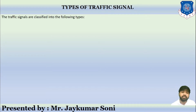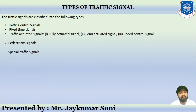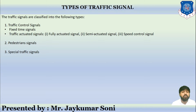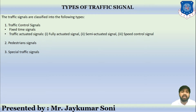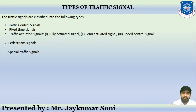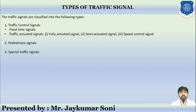The traffic signals can be classified into three types: traffic control signal, pedestrian signal, and special traffic signal. The traffic control signals can be divided into two types — fixed traffic signal and traffic actuated signal. The traffic actuated signals are further classified into three types: fully actuated signal, semi-actuated signal, and speed control signal.